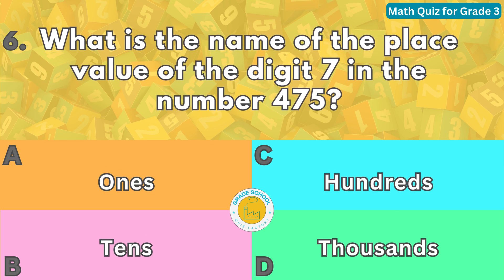Question number six. What is the name of the place value of the digit seven in the number 475? The correct answer is letter B.